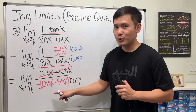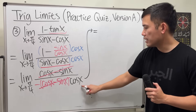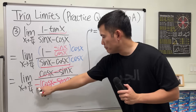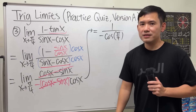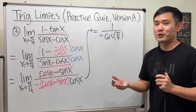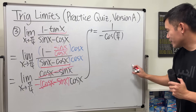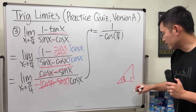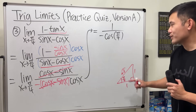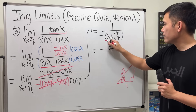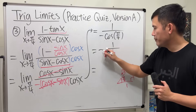Once we cancel, there's no more 0 over 0 situation. We just plug in pi over 4 into cosine x, giving 1 over negative cosine(pi/4). Using the 45-45-90 special right triangle, cosine of pi over 4 is 1 over root 2. So we have negative 1 divided by (1/root 2) — flip that, and the final answer is negative square root of 2.